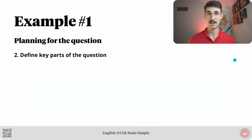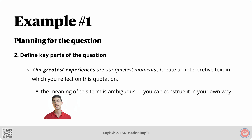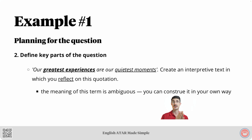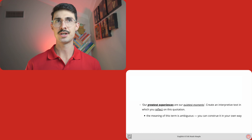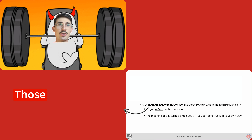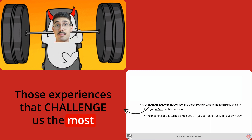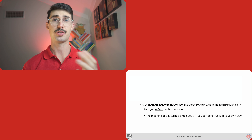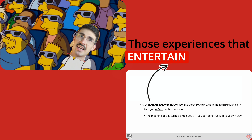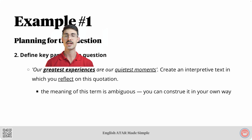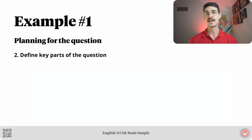Step two: define key parts of the question. The first key part was 'greatest experiences.' The meaning of this term is ambiguous — it's open to interpretation, which means you can construe or interpret it in your own way. For example, I might interpret 'greatest experiences' as meaning those experiences that challenge us the most, or as those experiences that entertain us the most. You can interpret this term however you like, but it is very important that you express what that actual interpretation is in your answer.